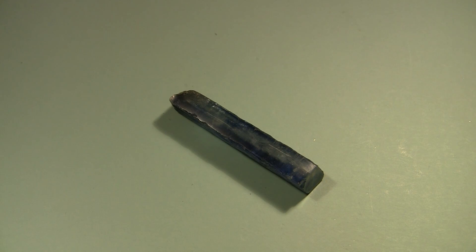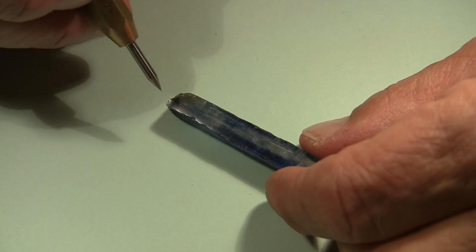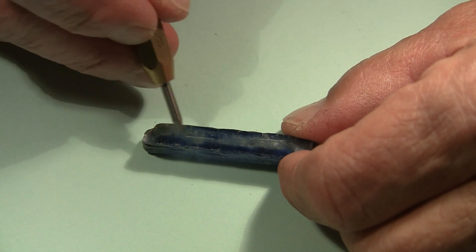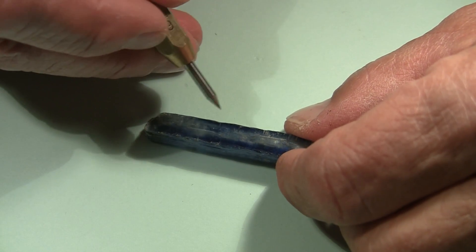This is a crystal of the mineral kyanite. Some minerals have different hardnesses in different directions, and kyanite is one that shows that unique physical property pretty well. In fact, the hardness of the crystal in this direction is about 4.5, and the hardness in this direction is about 7.